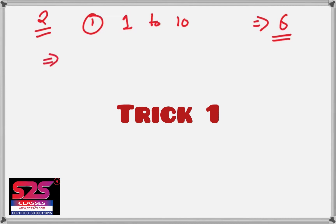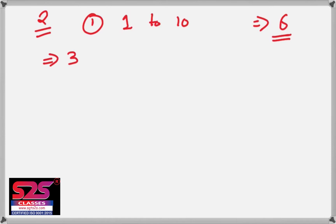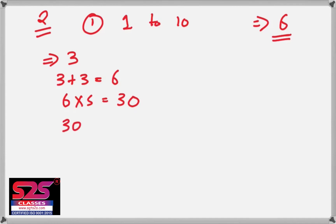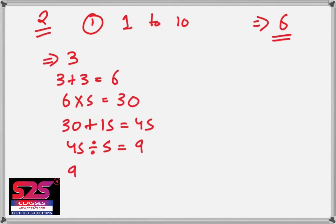Let me take an example. If I take my number as 3 and add 3 to it, that gives me 6. Then multiply by 5, which gives 30. Then add 15, which gives 45. Then divide by 5, which gives 9. The final step is to subtract the number you originally took — that is 9 minus 3 — which gives you 6, as predicted.